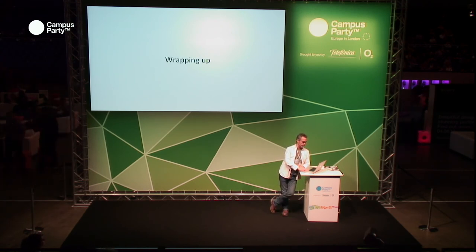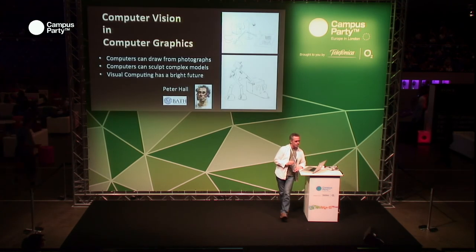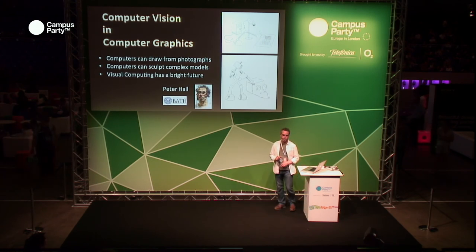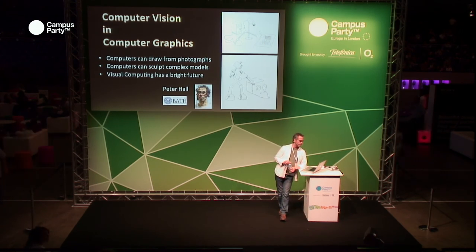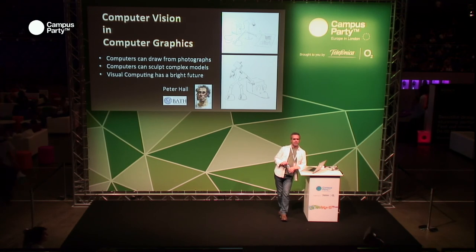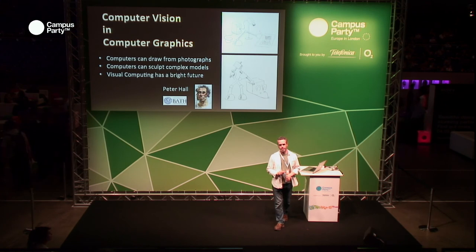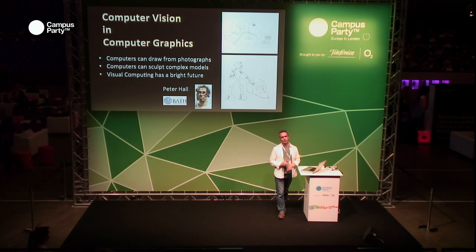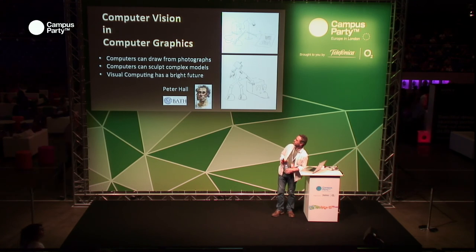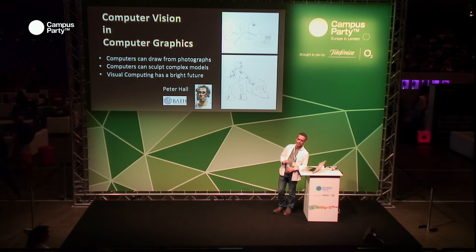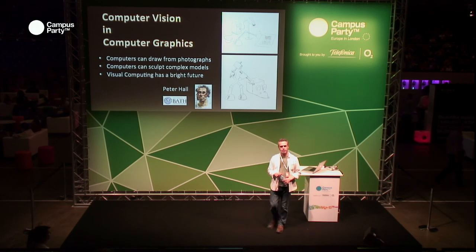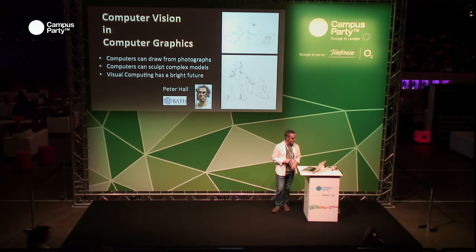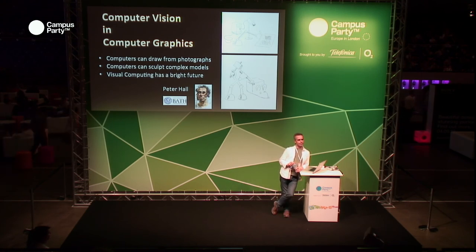I've gone rather faster than I thought I would, but that doesn't matter. Wrapping up: I've hoped to show you that computers really can draw what they see. It's interesting to ask how computers see and what they can see, but nonetheless computers can draw from photographs, they can sculpt complicated models, and that's of real value to the creative industries here in the UK. Visual computing — this combination of computer graphics and computer vision — I think has an especially bright future; it's one of the UK's strongest industries, and we're very pleased to be a part of it.